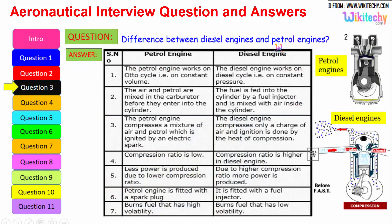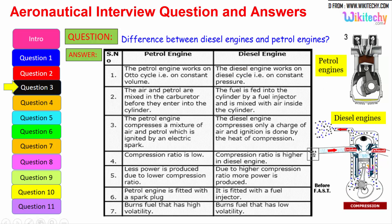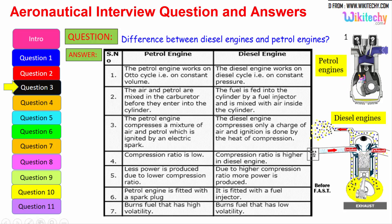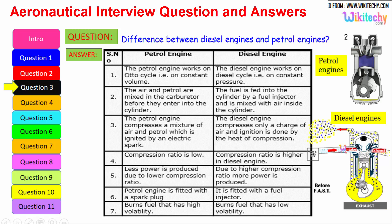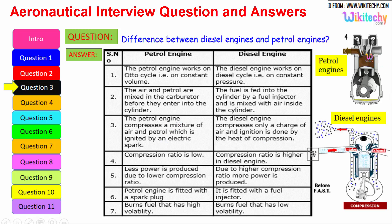Let us see the difference between the diesel engine and the petrol engine. The petrol engine works on the Otto cycle, therefore on constant volume, whereas the diesel engine works on the diesel cycle at constant pressure. The air and petrol are mixed in the carburetor before entering the cylinder, while in a diesel engine the fuel is fed into the cylinder by a fuel injector and mixed with air inside the cylinder. The petrol engine compresses a mixture of air and petrol which is ignited by an electrical spark, whereas the diesel engine compresses only air and ignition is done by the heat of compression.